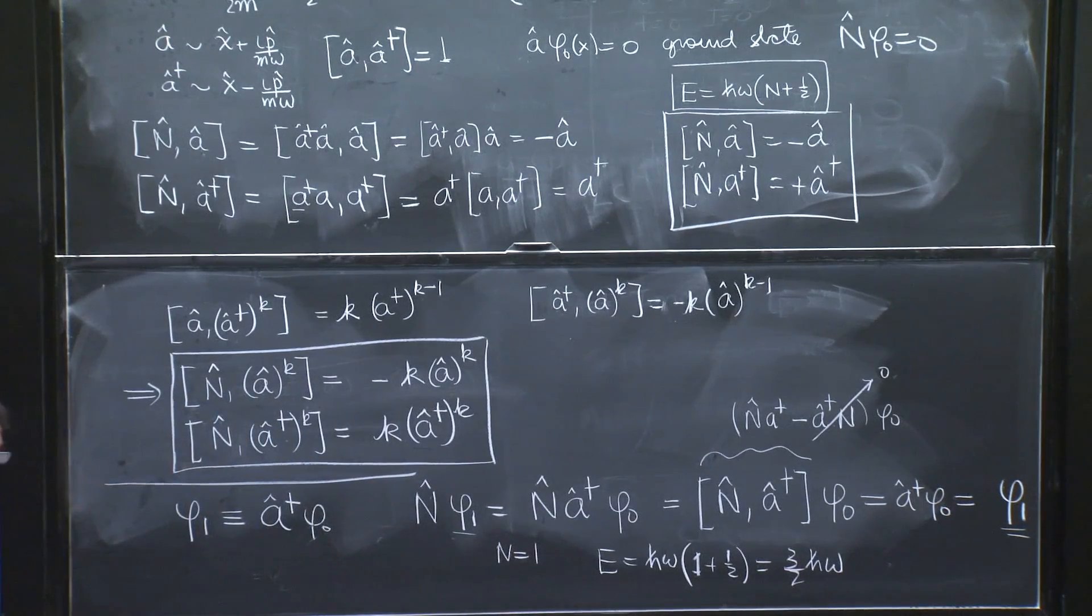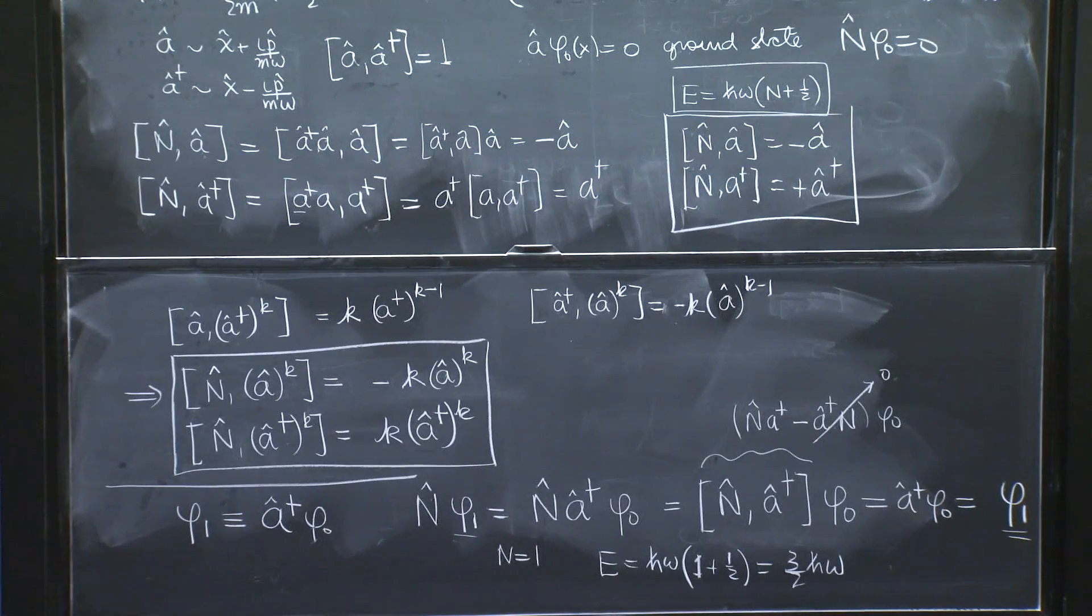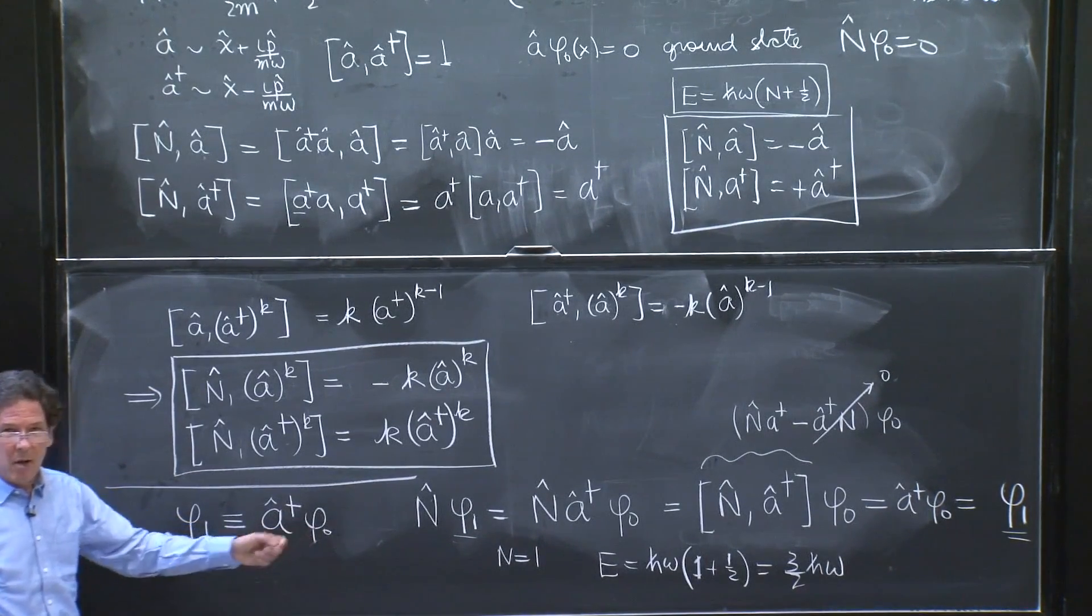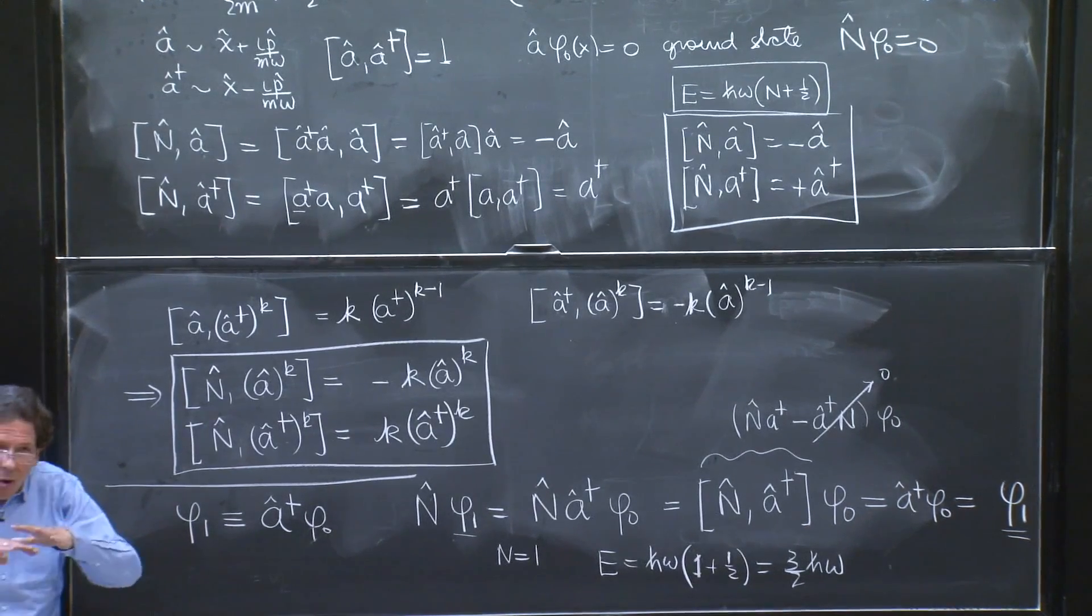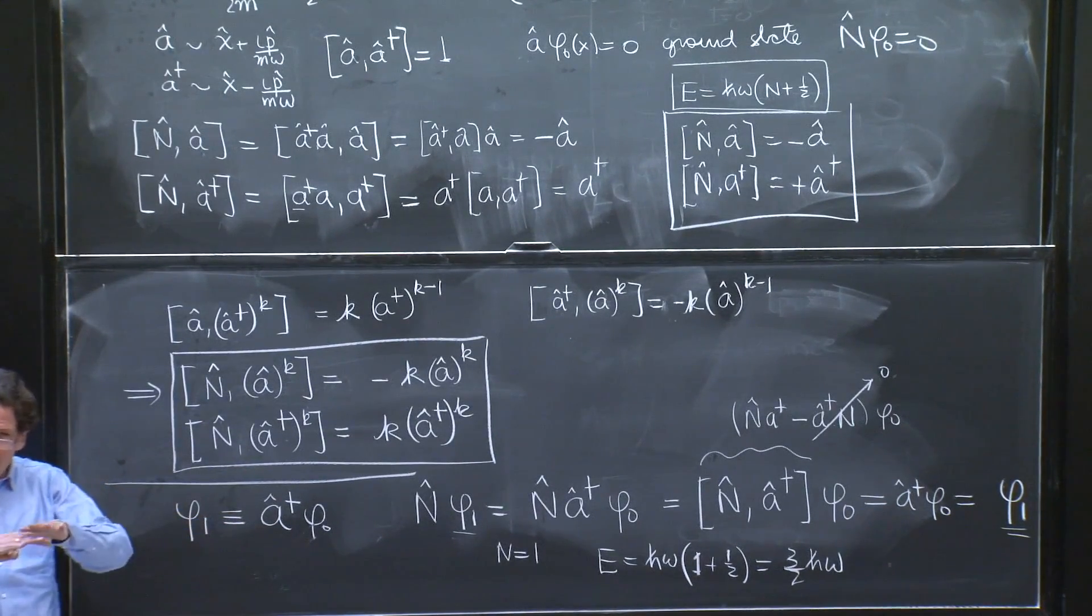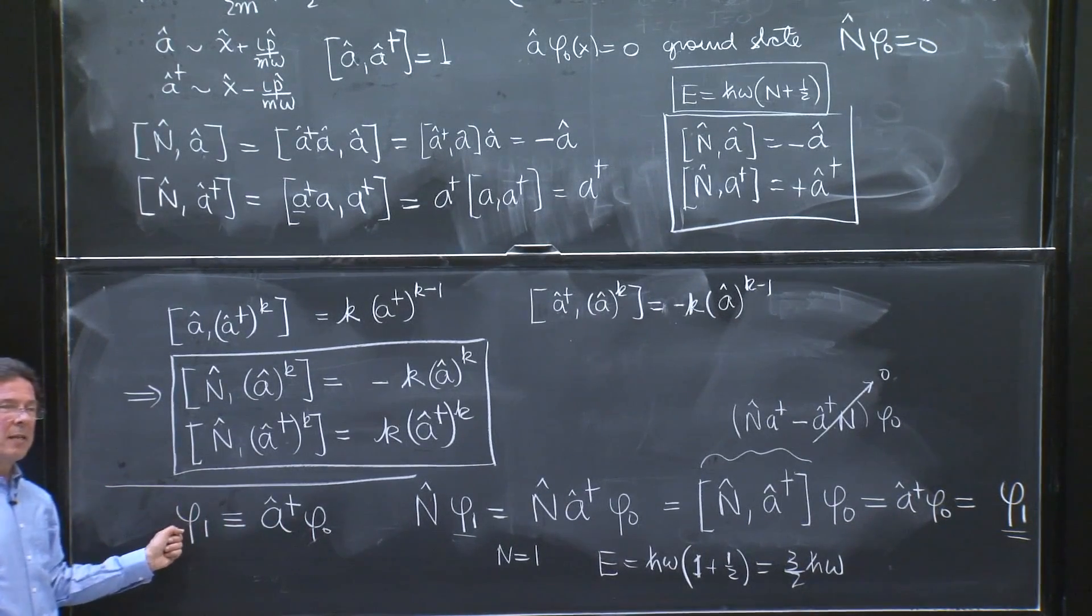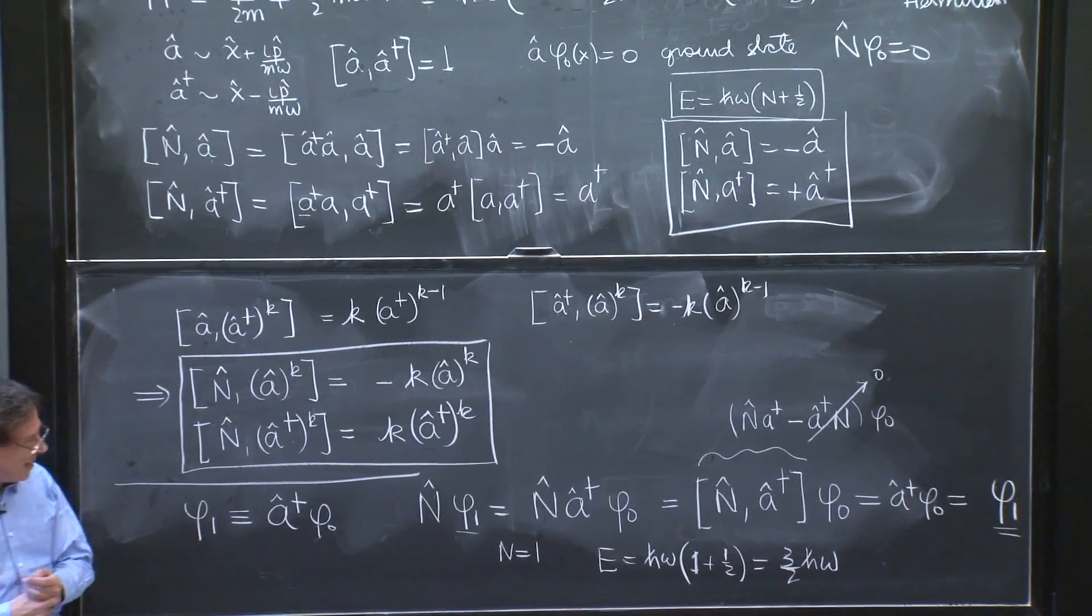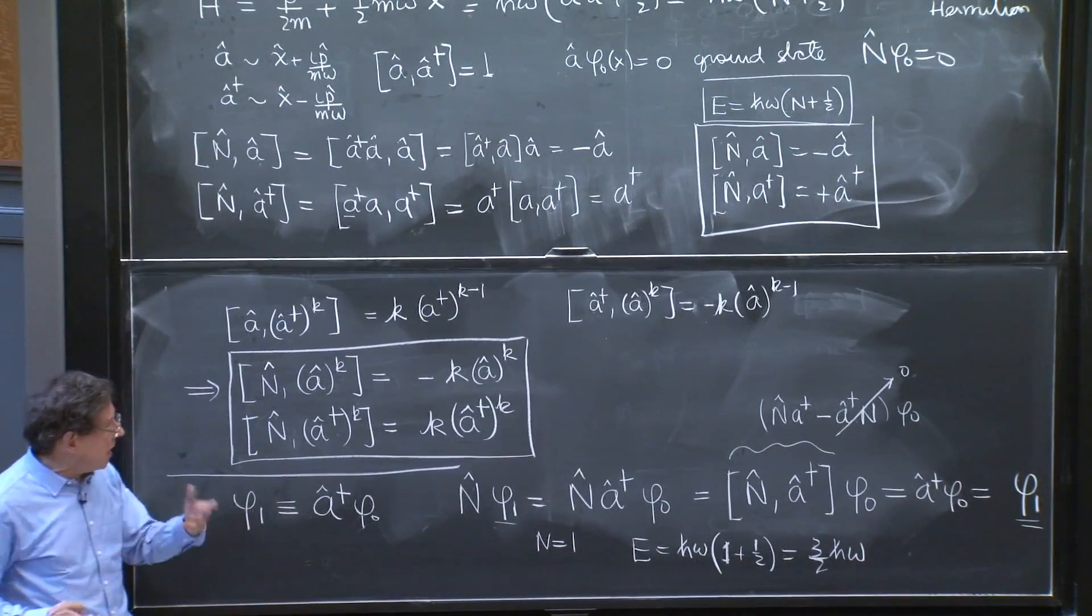And look what this is. This is the reason this is called the creation operator. Because by acting on the ground state, what people sometimes call the vacuum, the lowest energy state. The vacuum is called the lowest energy state. By acting on the vacuum, you get a state. And you've created a state, therefore.